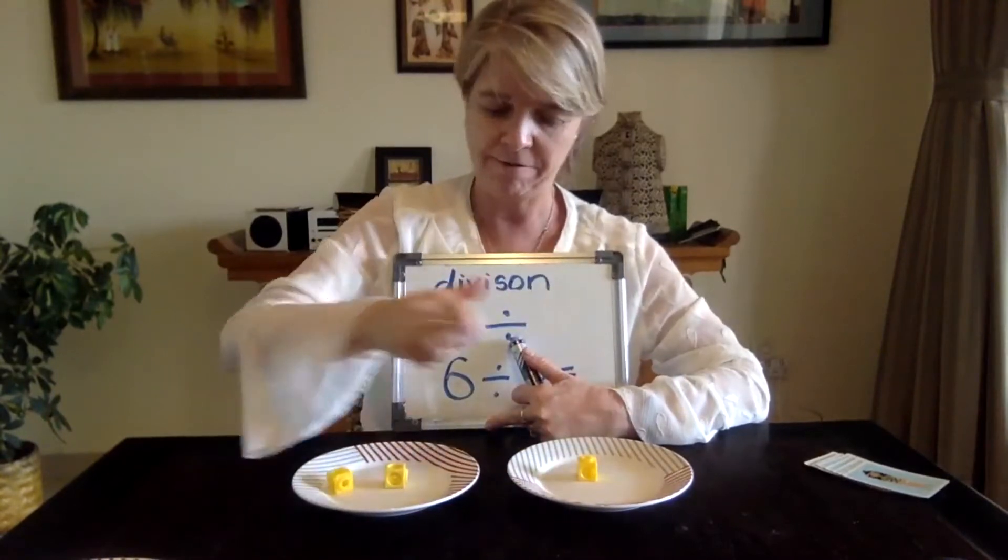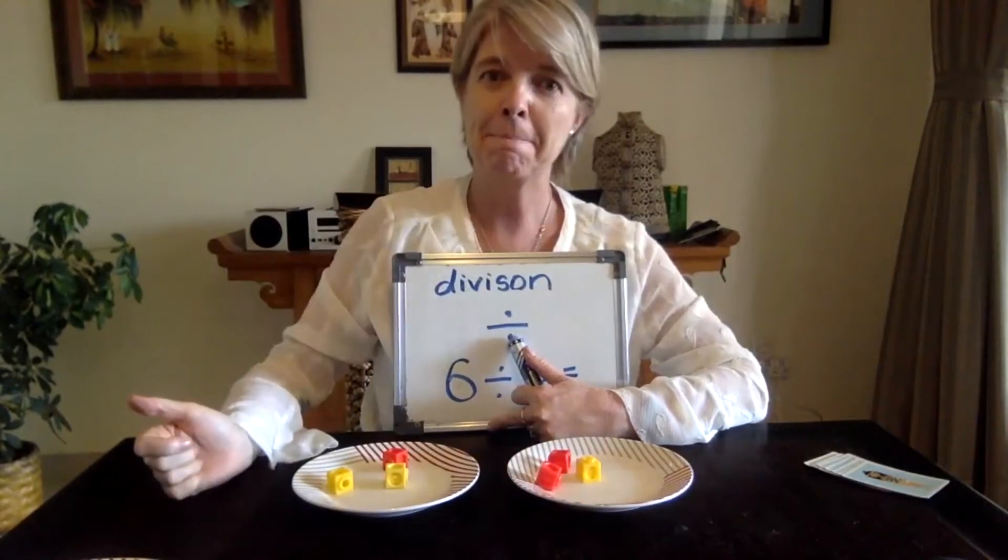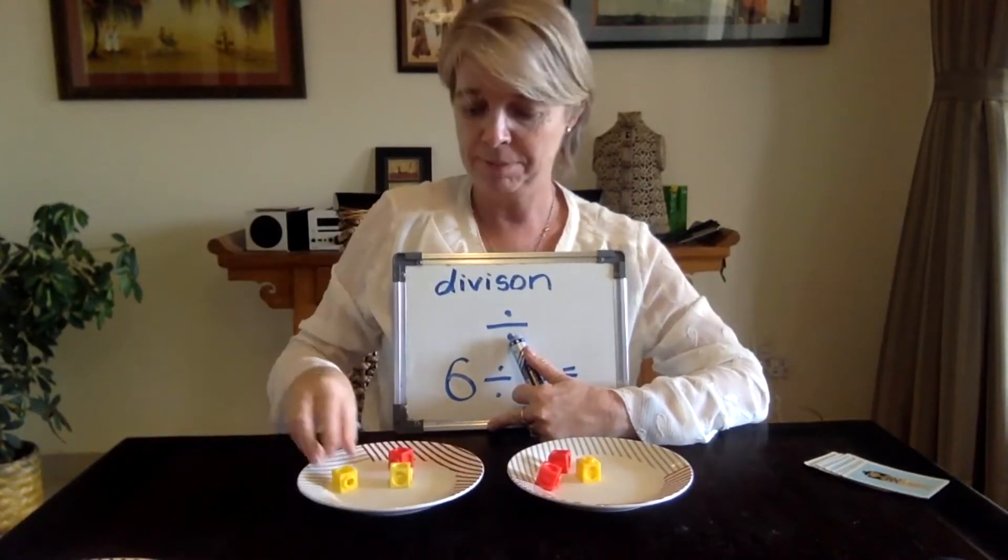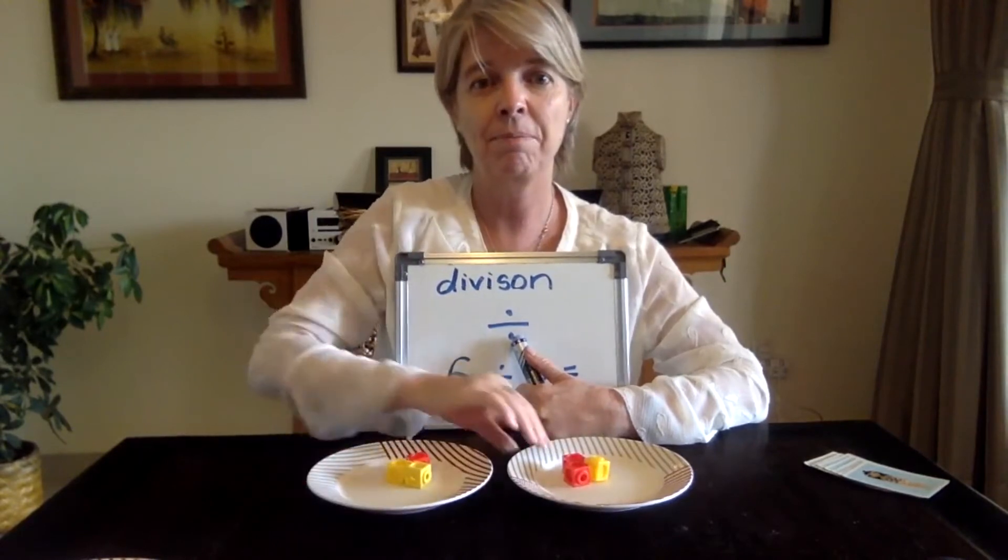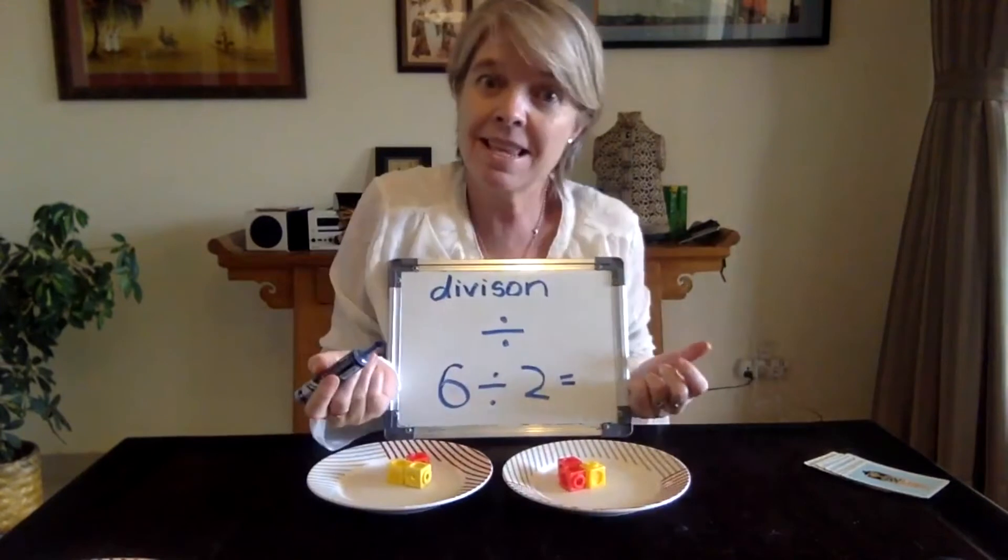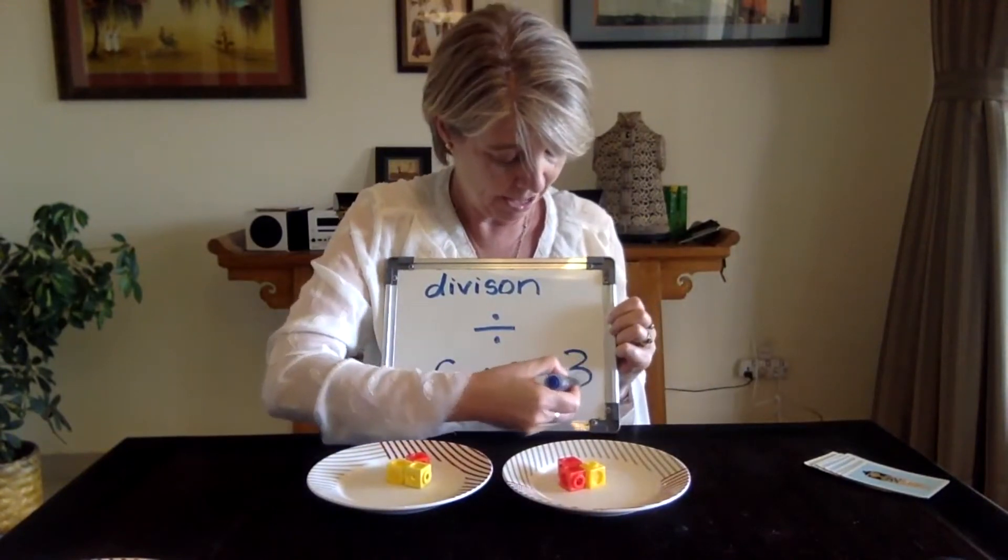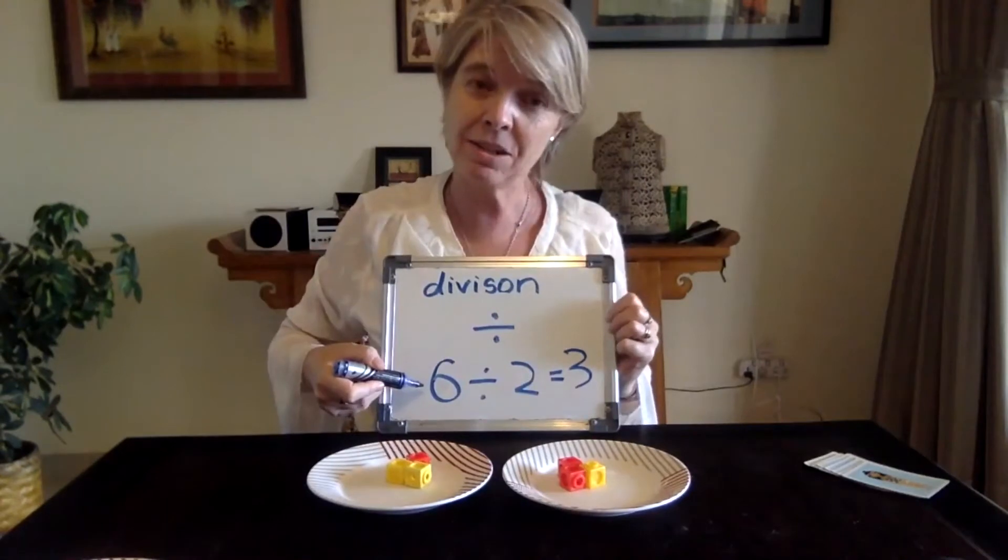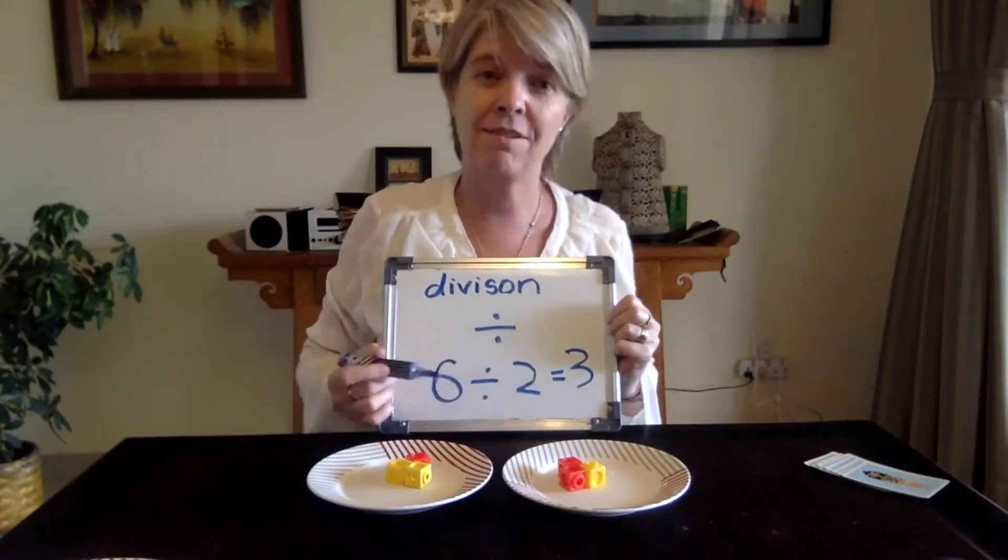one for you, one for me, one for you, one for me. How many cubes do we get each? Three. See? It's that easy. The answer is three. So when I share out six cubes between two people, we get three each.